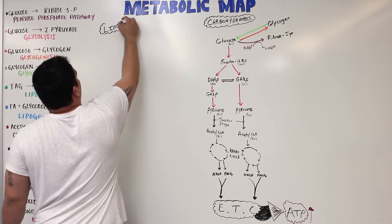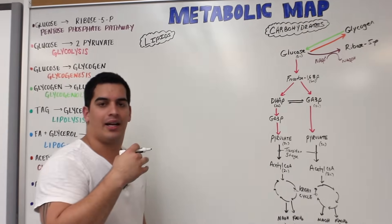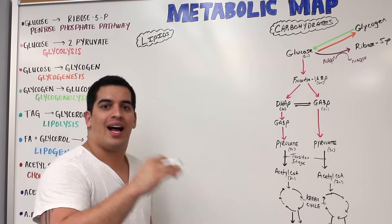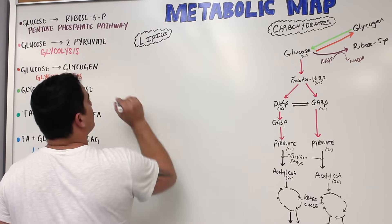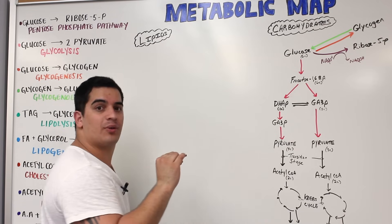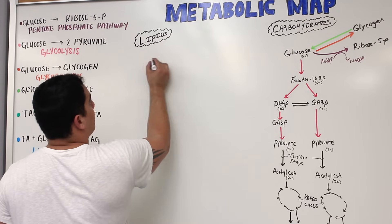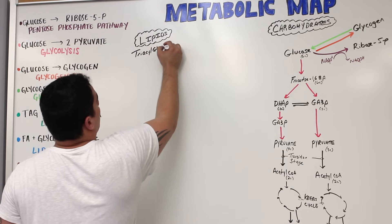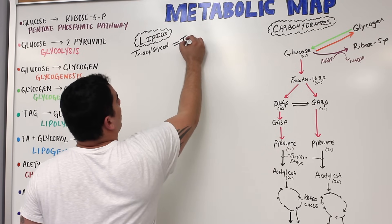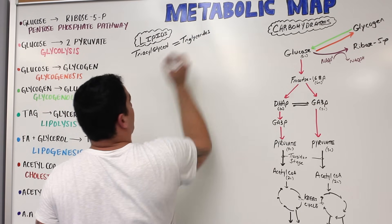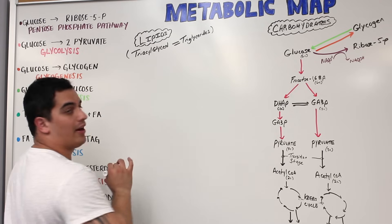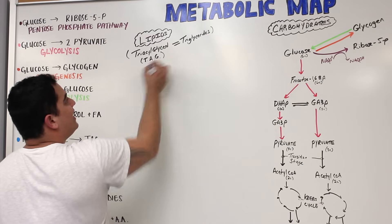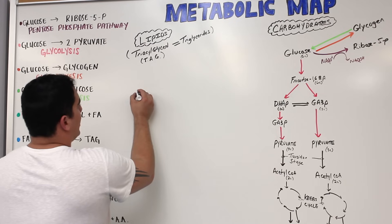Lipids, when we take them into the body, are stored inside our adipose tissue or a little bit in the liver tissue in the form of what's called triglycerides. Triglycerides are also referred to as triacylglycerol — I'll abbreviate this as TAG. Triacylglycerol and triglycerides are synonymous terms, and I'll use TAG going forward to keep things compact.